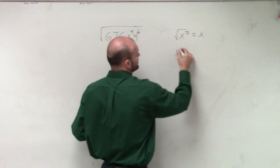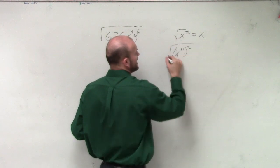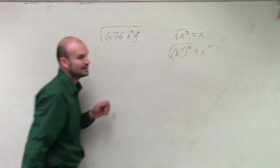Then, even if I wrote x to the 11th squared, the square root of that, my square roots cancel out, leaving me x to the 11th.